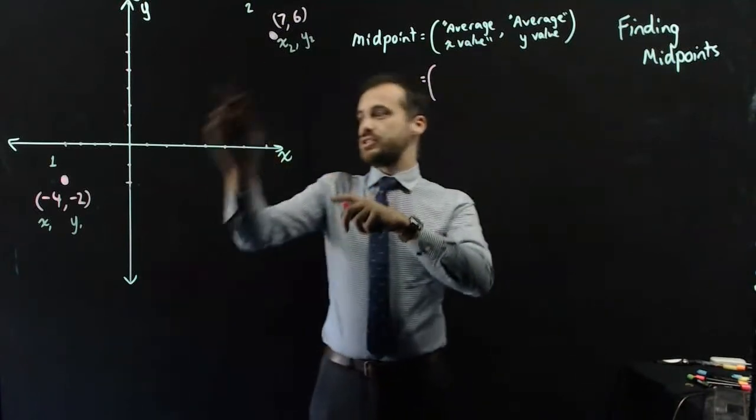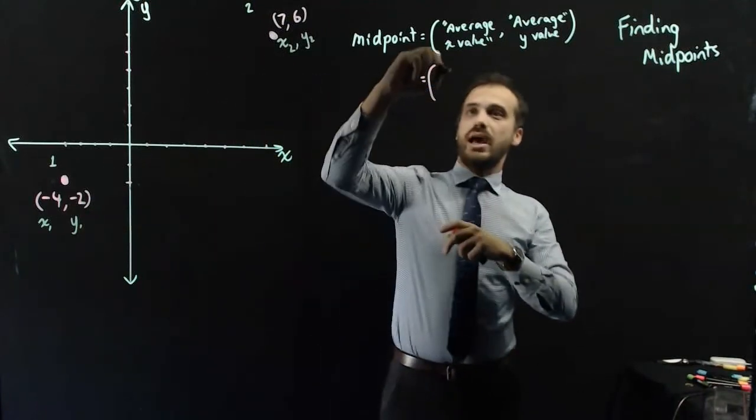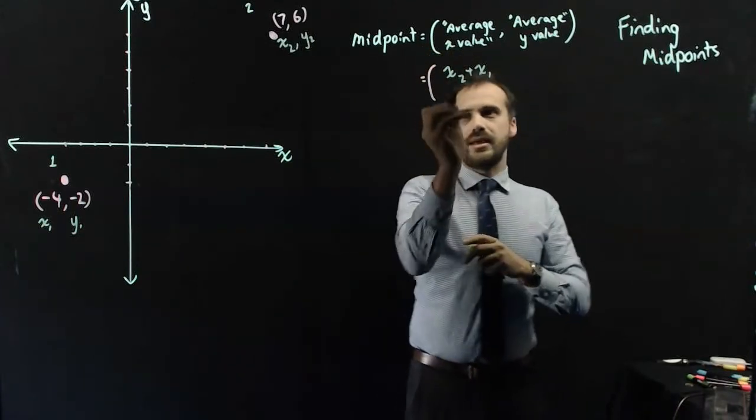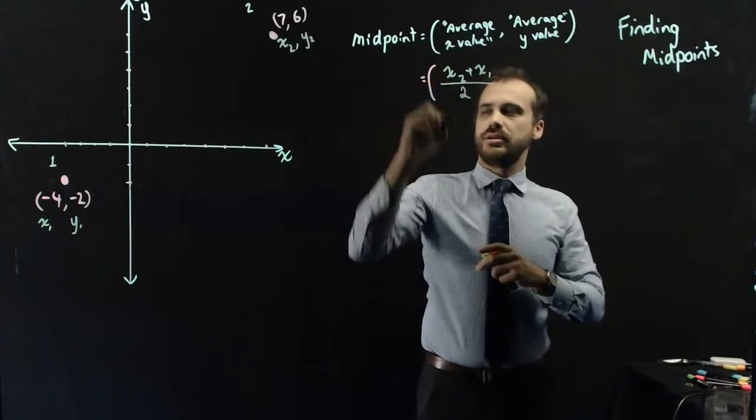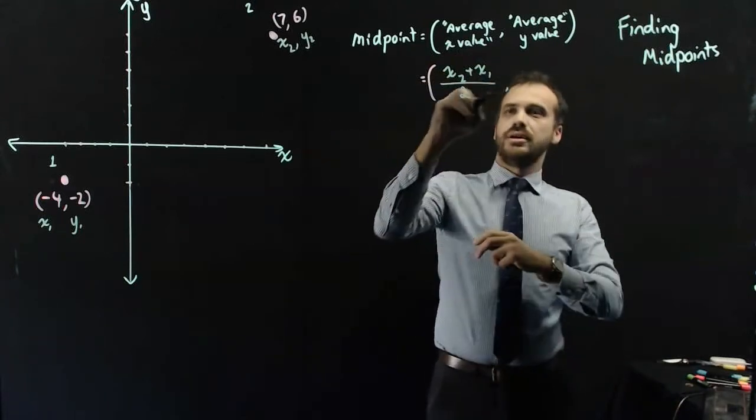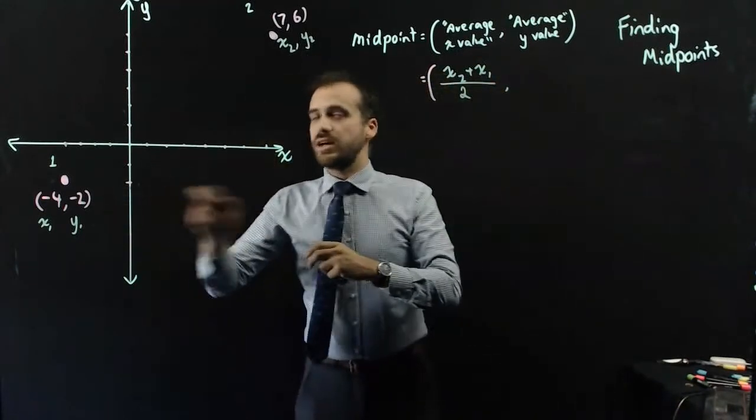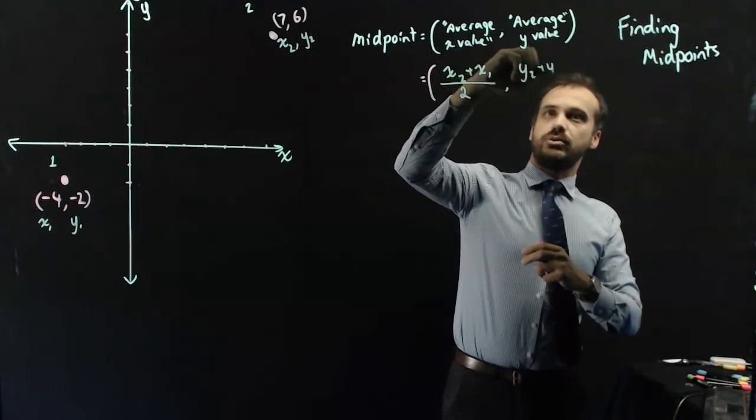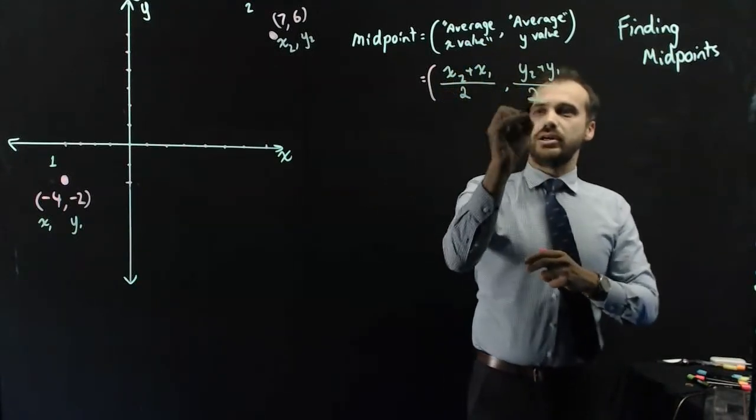We're going to find the average x values by adding those two together, x2 plus x1, and then dividing it by the number of numbers, 2. And we're going to find the average y value by adding those together, y2 plus y1, and then dividing by 2.